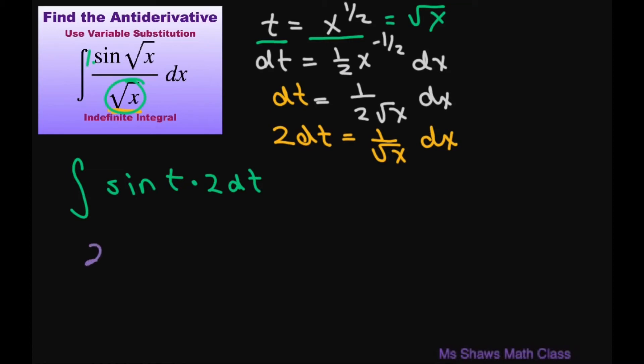So we have two times the integral of sine of t dt. We integrate this and find the antiderivative of sine of t, which is negative cosine of t plus c. And we still have that two, so I'm going to put the two right there.